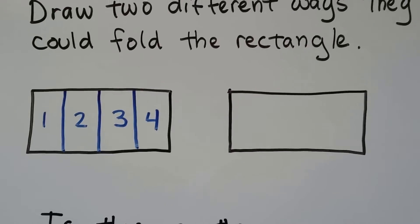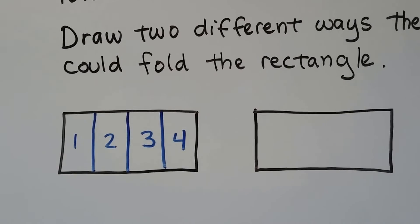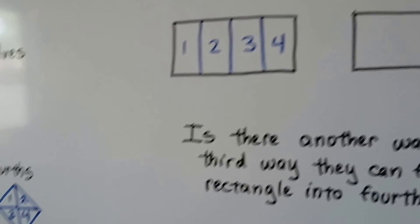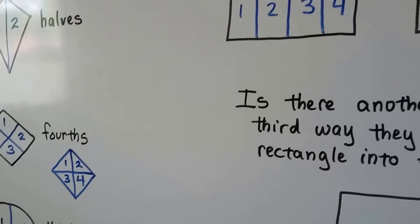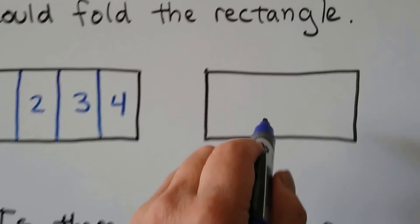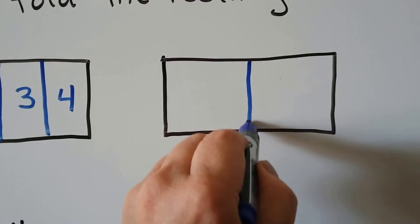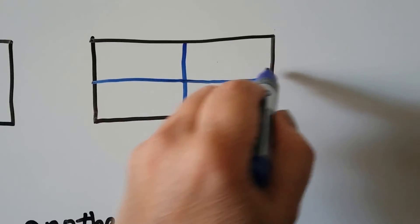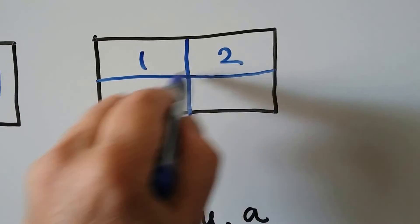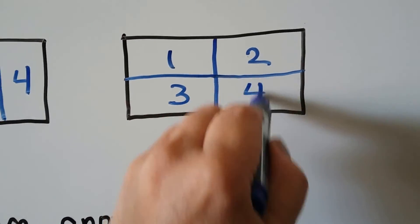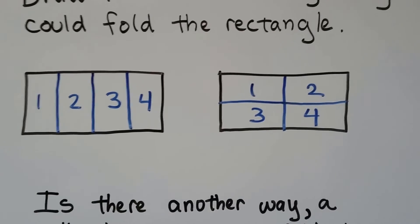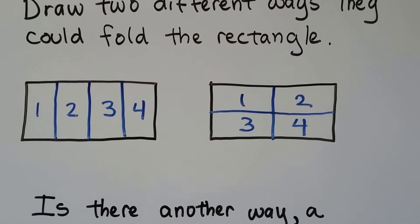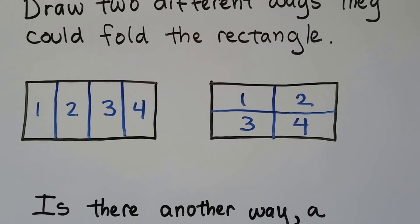What would be another way to make four equal parts? The clue is what we did with the diamond. We could cut it in half this way, then cut those halves going the other way, and we'd have one, two, three, four. So there are two different ways to fold the rectangle to make fourths.